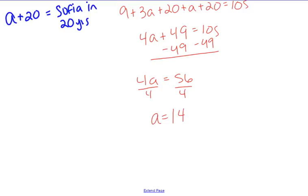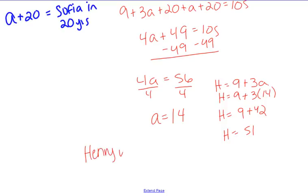It doesn't ask for Sophia, though. It asks how old Henry is. So Henry, remember, is 9 more than 3 times as old as Sophia. So 9 plus 3 times 14. Henry would be 9 plus 42. Henry is 51 years old. So we would say Henry is currently 51 years old. And that's my answer.